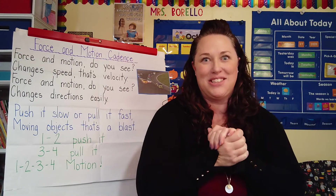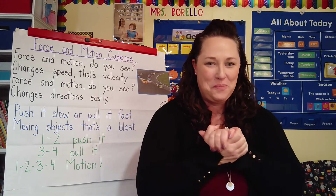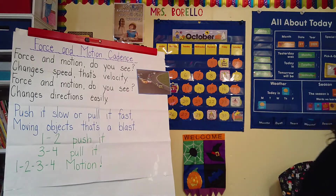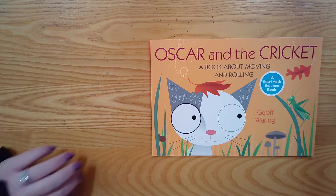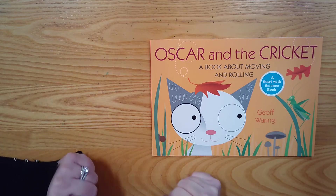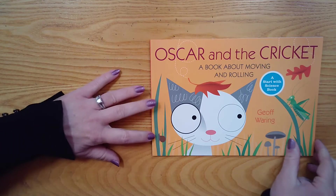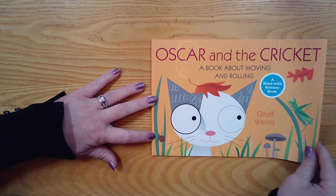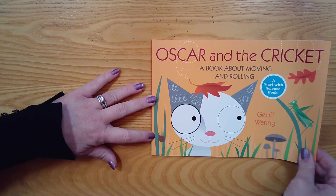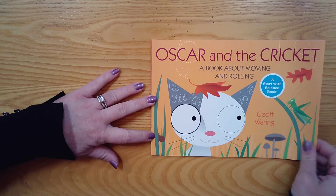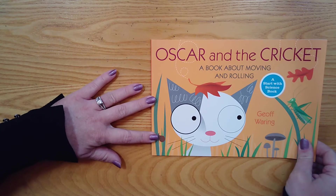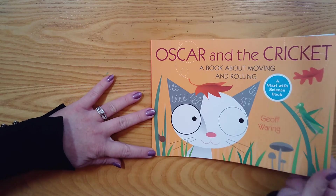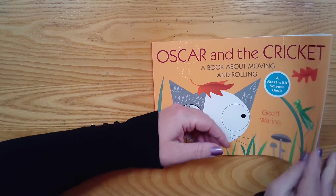I now have a fantastic story for you. This story is called Oscar and the Cricket: a book about moving and rolling, by Jeff Warring.